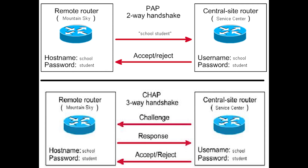This video is on PAP versus CHAP. There are two general methods used by a point-to-point protocol for authentication: PAP and CHAP. Password Authentication Protocol is old and isn't really used anymore except on legacy systems. PAP has a weak authentication method because no encryption is utilized, which means all information delivered is in clear text, and it utilizes only a two-step process to verify the identity of a client.